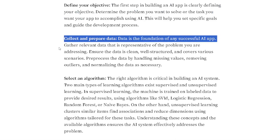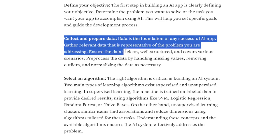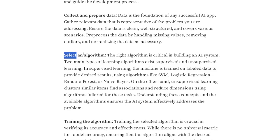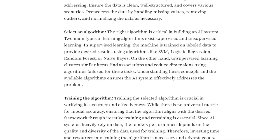Data is the foundation of any successful AI app. Gather relevant data that is representative of the problem you are addressing. Ensure the data is clean, well-structured, and covers various scenarios. Pre-process the data by handling missing values, removing outliers, and normalizing the data as necessary. Select the right algorithm — two main types of learning algorithms exist: supervised and unsupervised learning. In supervised learning, the machine is trained on labeled data using algorithms like SVM, logistic regression, random forest, or naive Bayes. Unsupervised learning clusters similar items, finds associations, and reduces dimensions using algorithms tailored for these tasks.